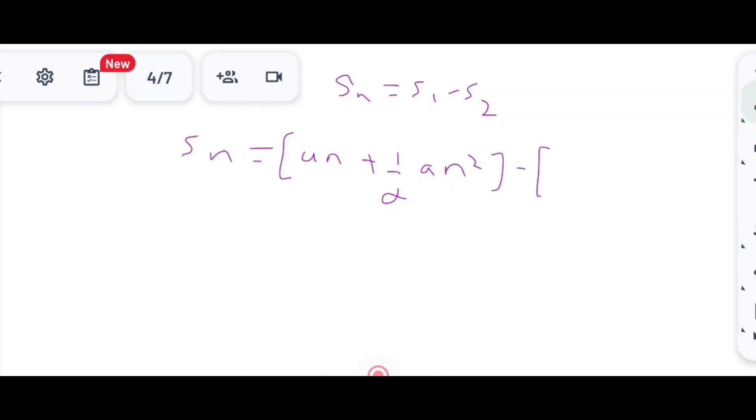So we have U times n plus half A n squared minus U into n minus 1 plus half A into n minus 1 whole squared. Expanding this: Un plus half An squared minus Un plus U minus half An squared plus An minus half A.